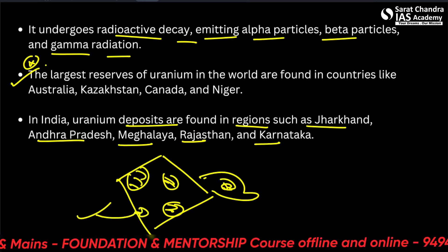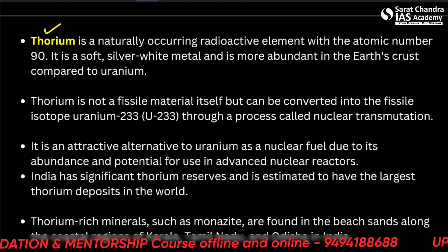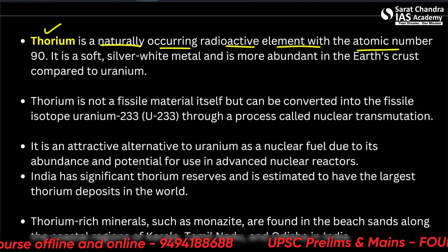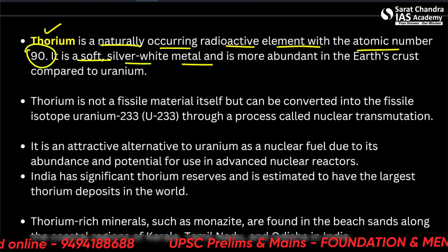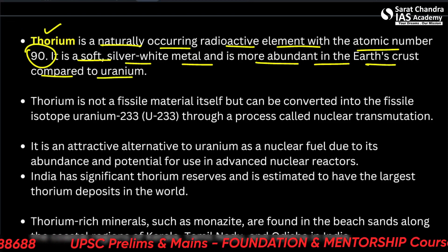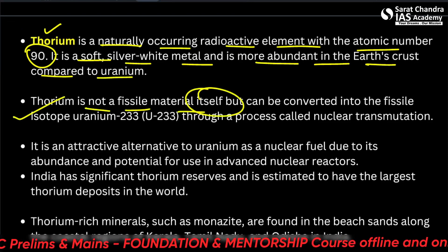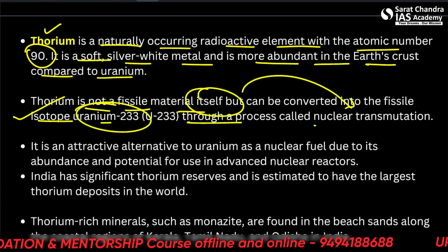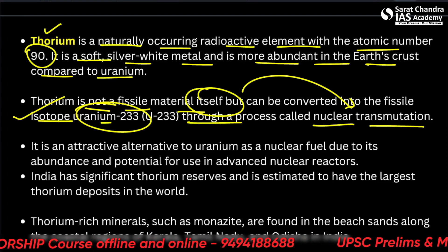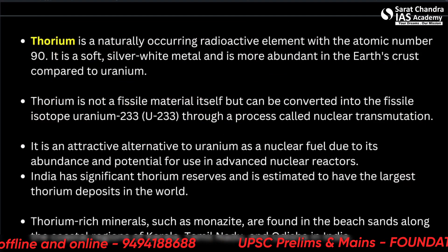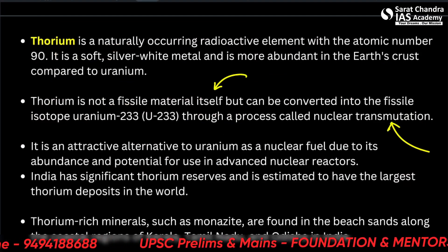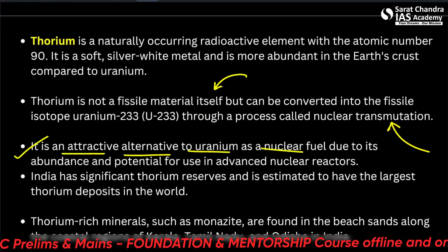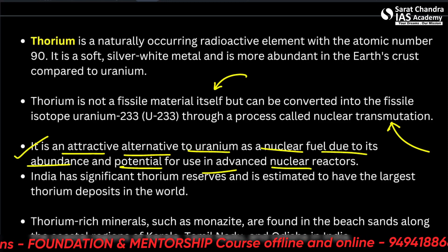Let's talk about thorium, which appeared in Prelims 2022. It is also a naturally occurring radioactive element with atomic number 90. It is a soft silver-white metal and is more abundant in Earth's crust compared to uranium. Thorium is not a fissile material itself, but can be converted into the fissile isotope uranium-233 through a process called nuclear transmutation. It needs transmutation in order to be used in nuclear fission reactions and is an attractive alternative to uranium as a nuclear fuel due to its abundance.